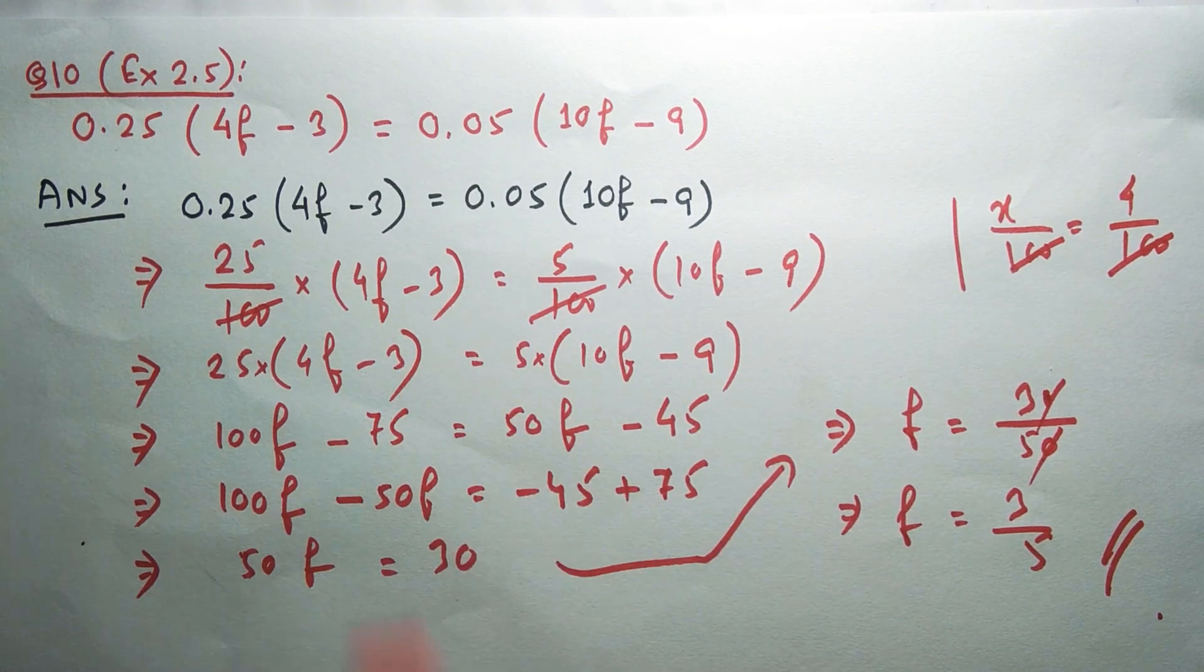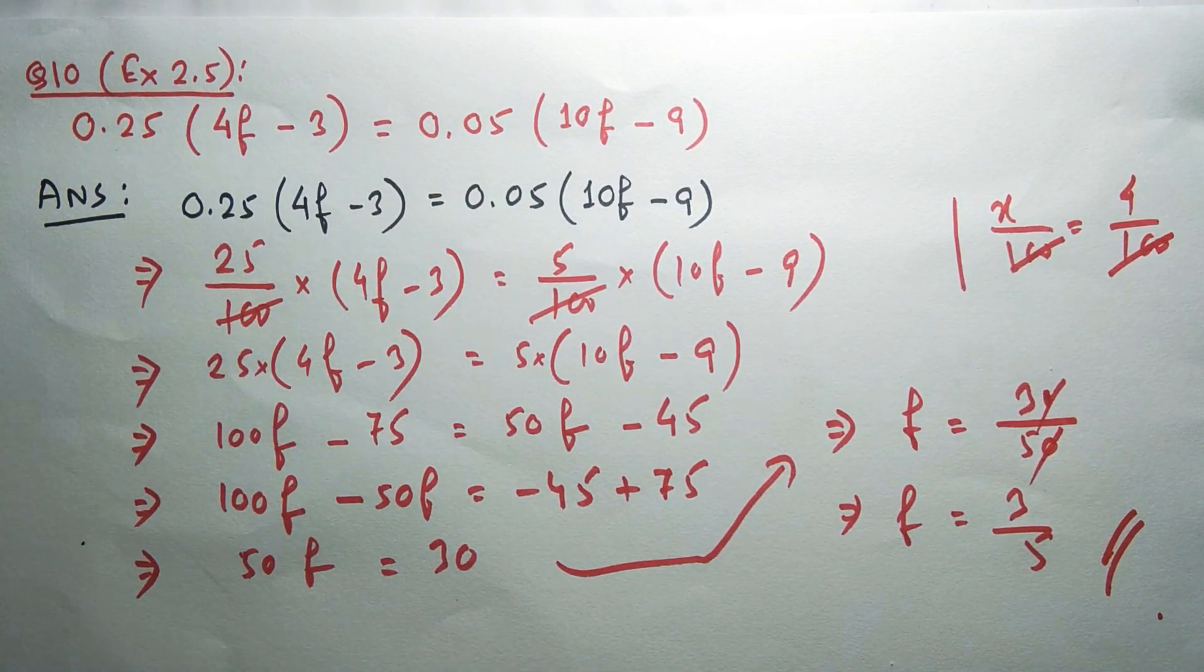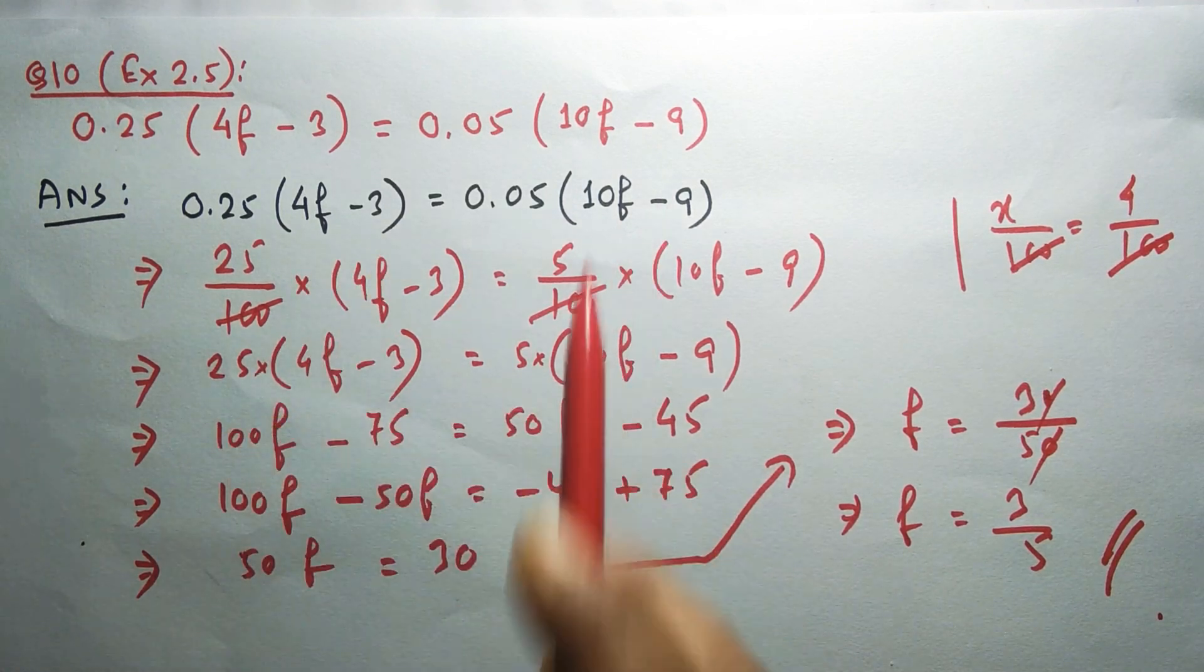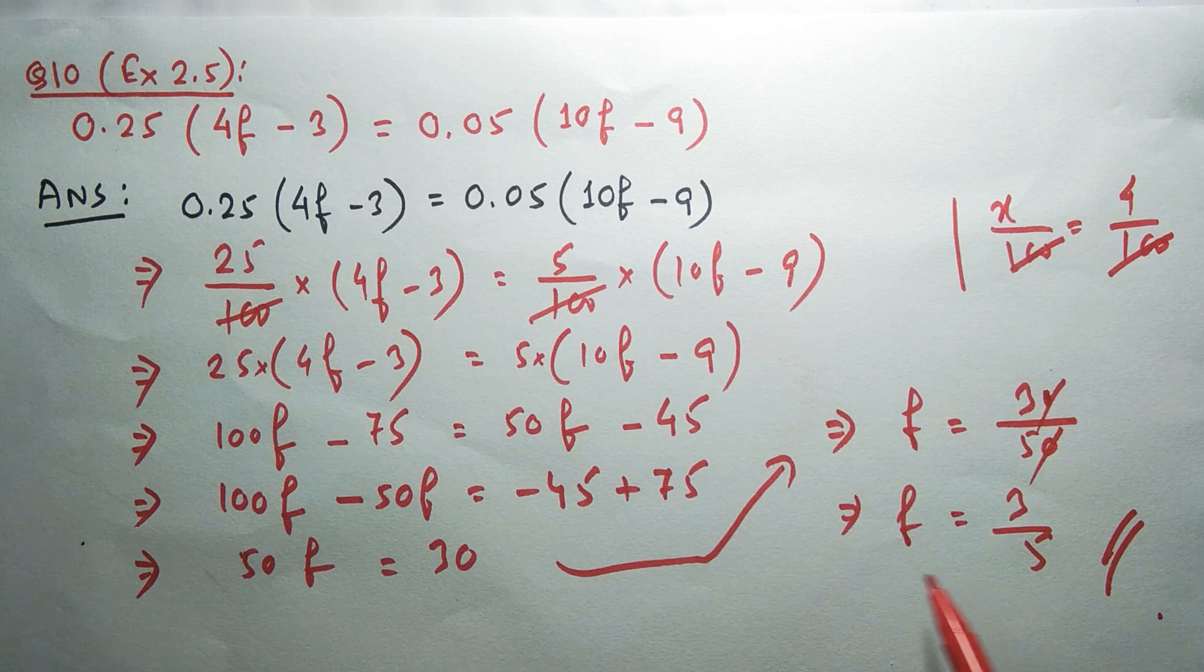It's not mandatory to convert to fractions. You can do it without converting, meaning you can directly multiply 0.25 and 0.05 with the terms given within the bracket.